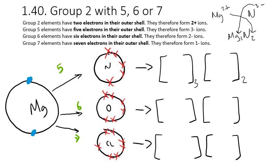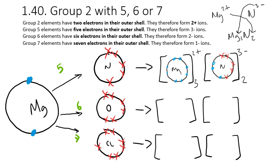Each of those magnesiums loses 2 electrons, the shell collapses, and we're left with 8 electrons in the outer shell — forming 3 Mg2+ ions. The nitrogen, having had 5 in the outer shell already, gains 3 electrons to form 2 N3- ions. That's now balanced and we're finished.